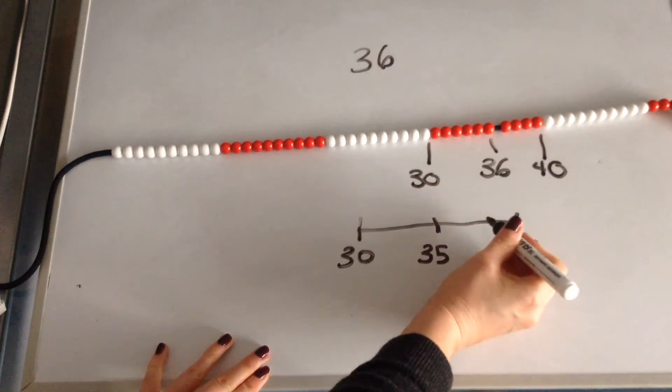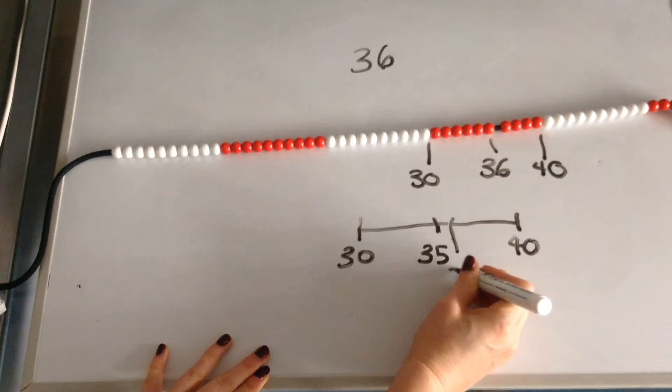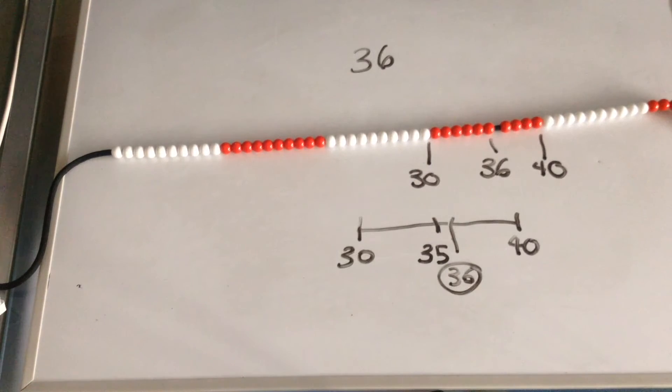And then I'm going to put my 36 on my number line. And I can see that this is closer to 40 than 30.